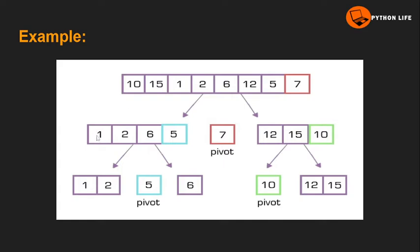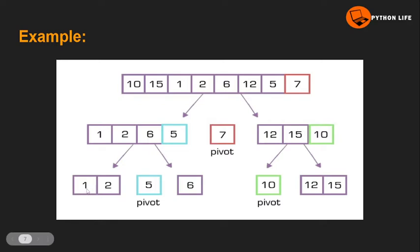In quick sort, we divide the array using the pivot element. On the left side array we have smaller values, and on the right side we have larger values. For example, with pivot element, values like 1, 2, 5 are on the left, and 10, 12, 15 are on the right. We divide and recursively sort. The final sorted array is: 1, 2, 5, 6, 10, 12, 15.